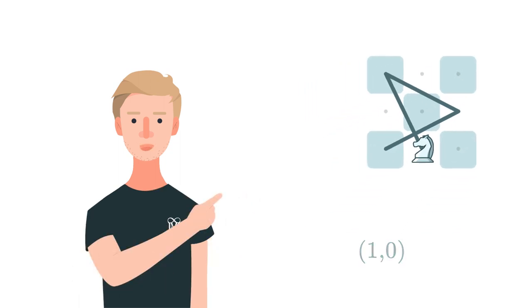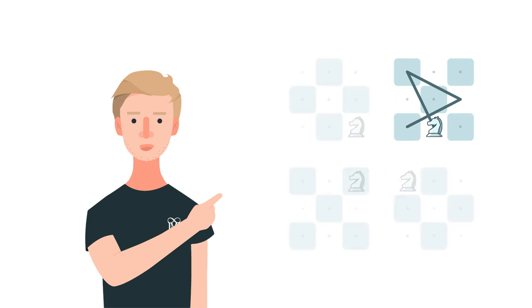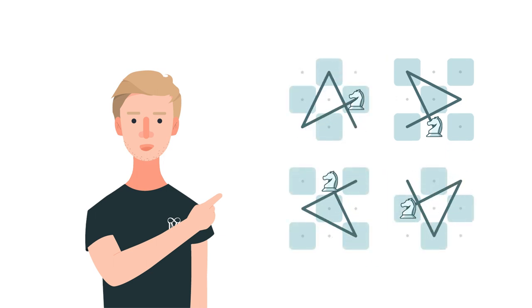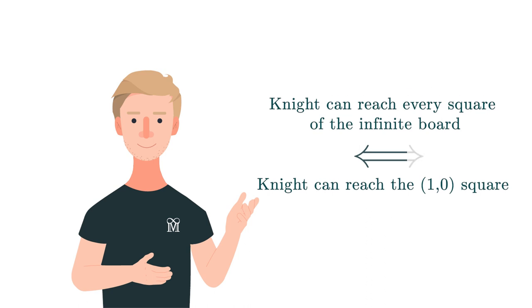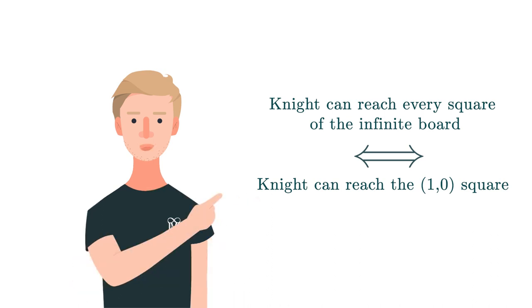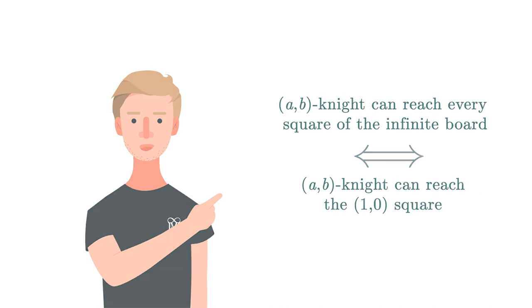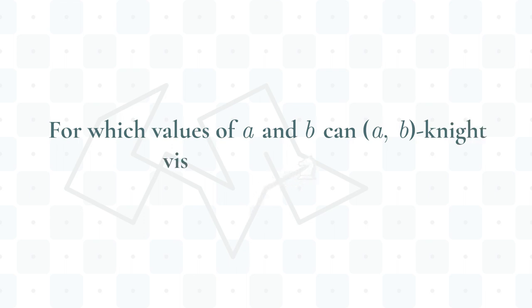So, first of all, let's create some strategy for this problem. In the elegant solution we've showed that the traditional Knight could reach the 1,0 square, and this was sufficient for showing that he can visit every square. In fact, these two statements are equivalent, because if Knight can reach every square, then, in particular, it must reach the 1,0 one. The same could be said about the a,b Knight, so our focus will be to show for which values of a and b can a,b Knight visit 1,0 square.